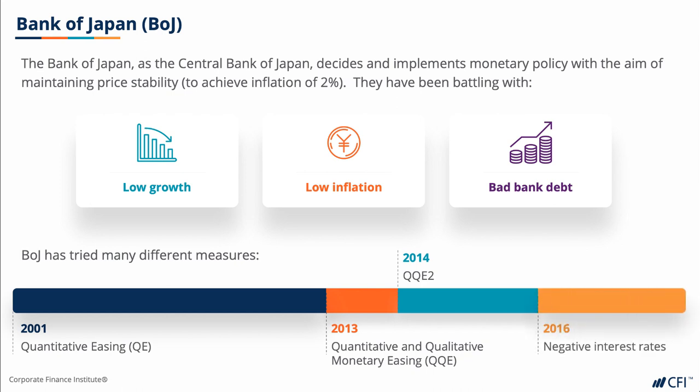In 2016, after QQE and QQE2 did not have the intended effect, the Bank of Japan introduced negative interest rates in order to force banks from placing their deposits with the BOJ and compel them to lend into the banking system to stimulate growth and inflation.